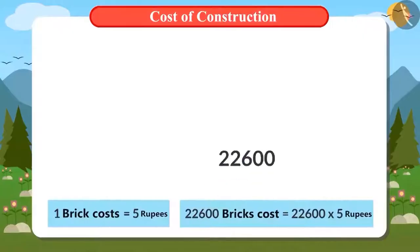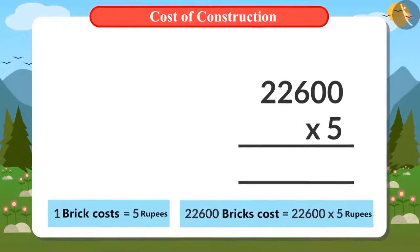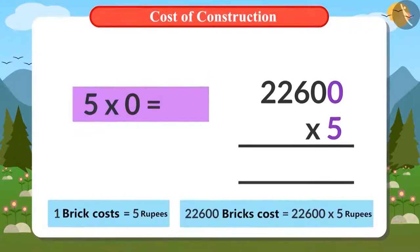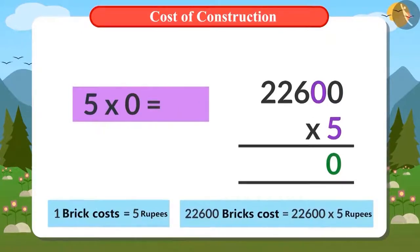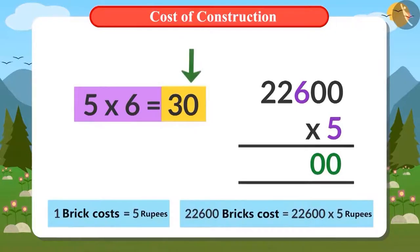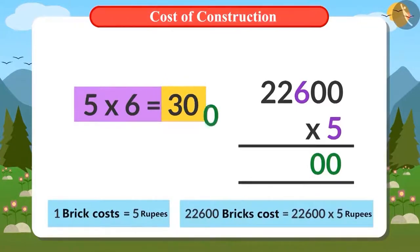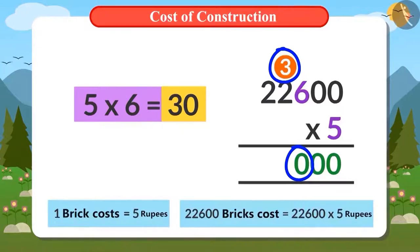Let's multiply. We write 22,600 and 5. First, 5 is multiplied by 0, giving 0. Then 5 is multiplied by 0 again, giving 0. Next, 5 is multiplied by 6, giving 30. 30 has 0 at the ones place and 3 at the tens place. We place the ones digit and carry over the tens digit.